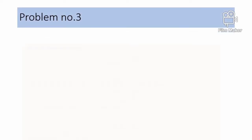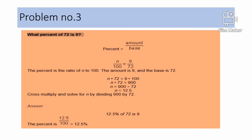Problem number 3: What percent of 72 is 9? The first step is to apply the formula: percent equals amount divided by base, so n divided by 100 equals 9 divided by 72. The percent is the ratio of n to 100, the amount is 9, and the base is 72. Cross multiply: n times 72 equals 100 times 9, which is 900. So 900 divided by 72 gives n equals 12.5.